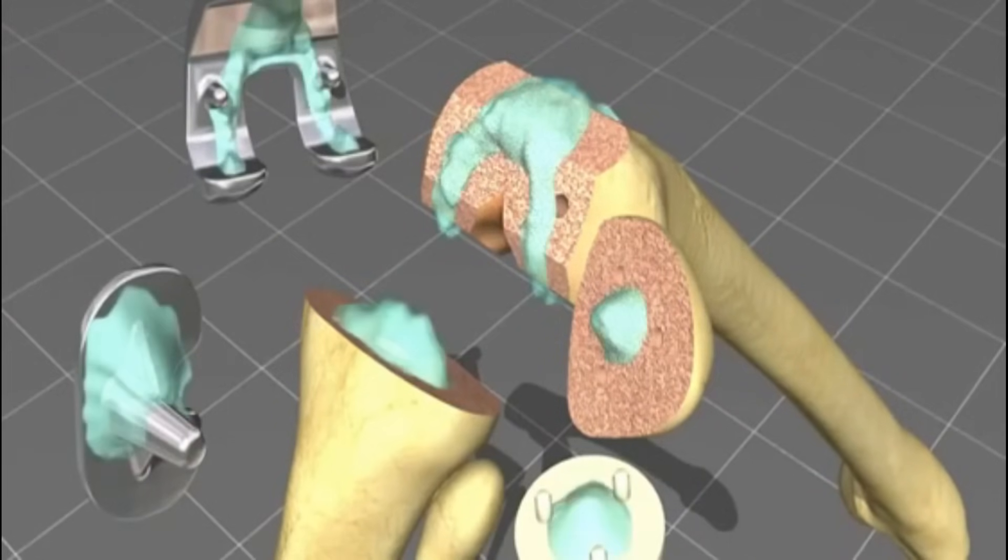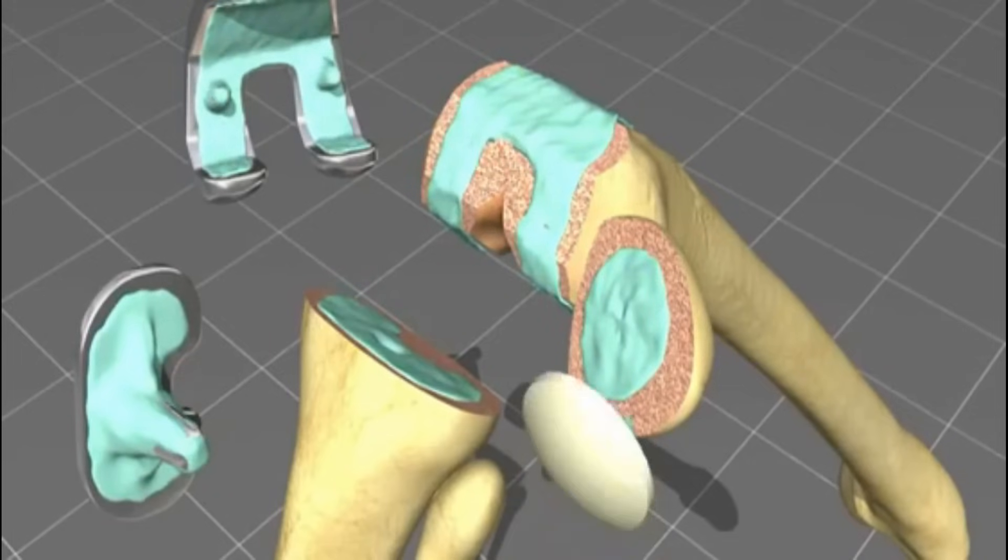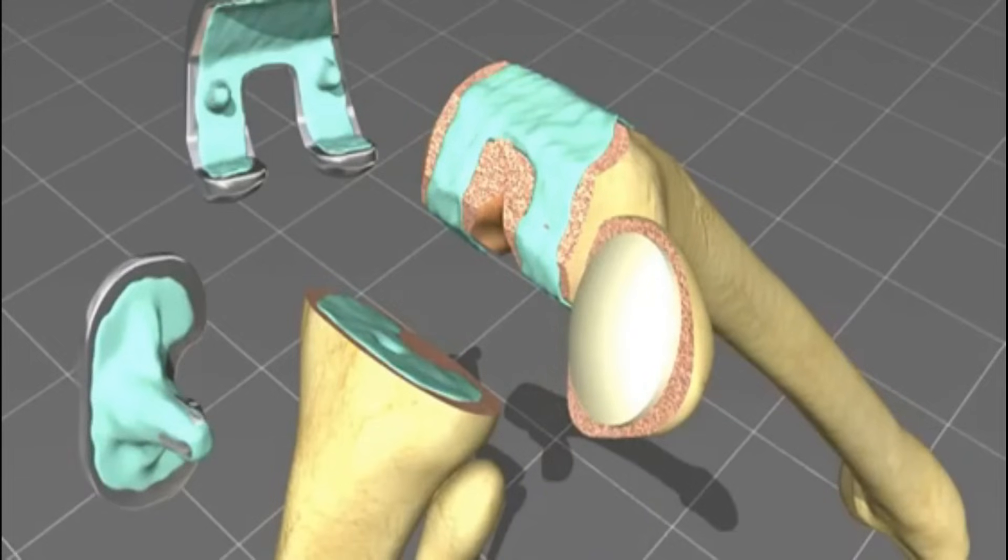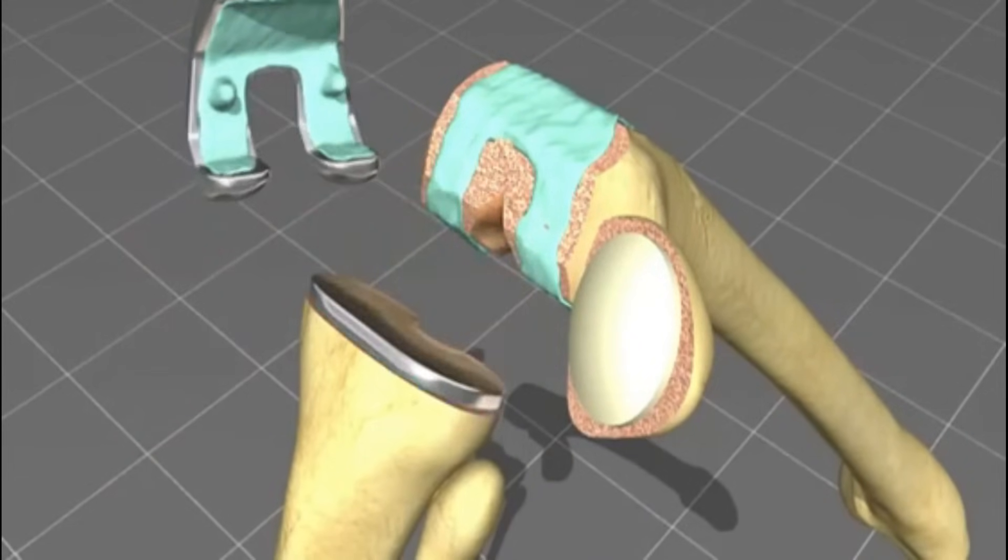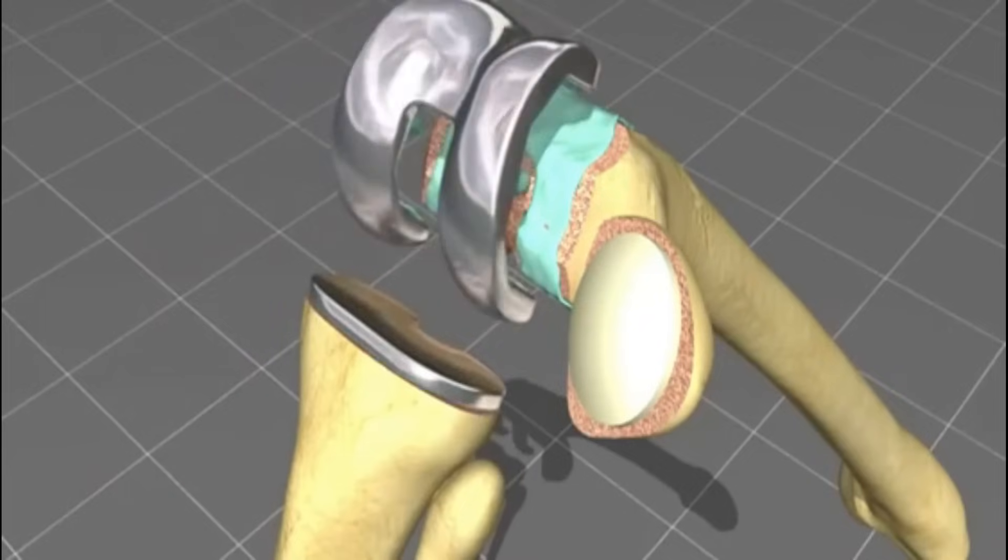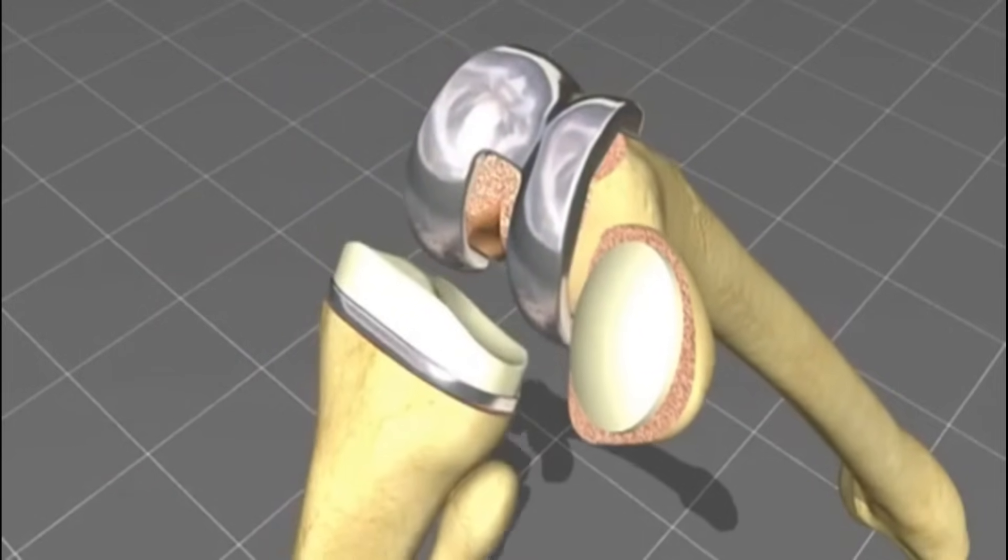After removal of the trial components, the original prosthetic components are glued with bone cement. The advantage of bone cement in total knee replacement is that the components are immediately stable and the bone surfaces are sealed by the bone cement.